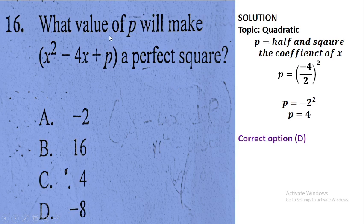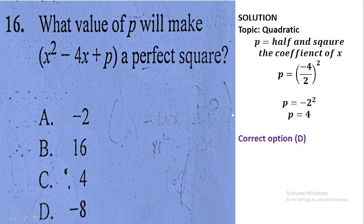Question number sixteen: find the value of P that makes x² − 4x + P a perfect square. Using completing the square: P = (−4/2)² = (−2)² = 4. The expression becomes x² − 4x + 4, a perfect square. The correct answer is option C. Note: option D was written in the video by mistake; the correct option is C.